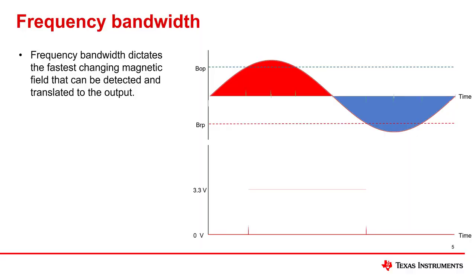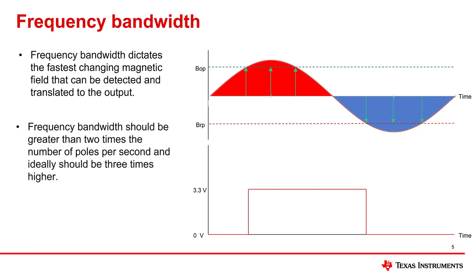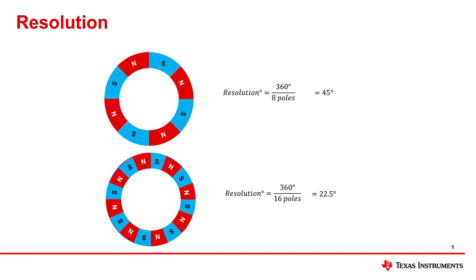The frequency bandwidth is an important parameter for a Hall sensor because it determines the max rotational speed that we can detect from the impeller while still updating the output appropriately. The frequency bandwidth for a selected device should be at least two, but ideally three times larger than the max electrical frequency of the impeller. If we were trying to optimize for resolution of the impeller's position, we could increase the number of poles to obtain more transitions. But since the key care about is speed and not resolution, we can reduce the amount of poles in our system.